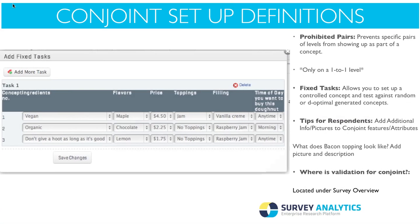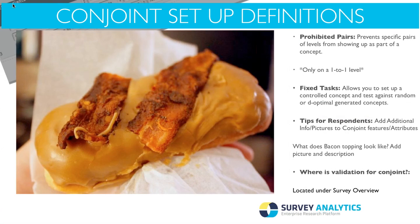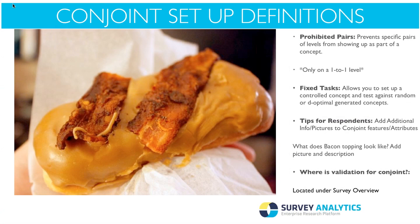Also in our system we have what's called fixed task options. This allows you to set up a controlled concept and test it against random or deoptimal generated concepts. For example, for the first task out of three, you can specify that you want to know how a vegan maple donut for $4.50 does in comparison to an organic chocolate donut versus a lemon flavored one, and then have the rest of the tasks be randomized by the system. If you'd like to add tips for respondents, you can also add pictures or additional information while they're taking the survey.